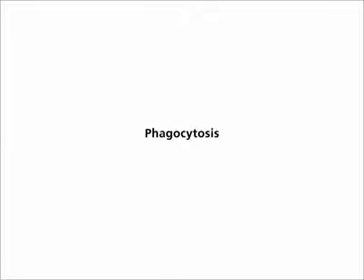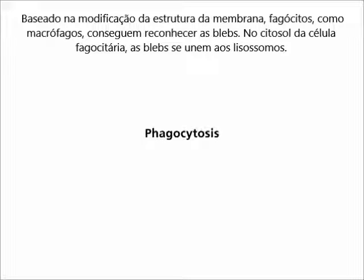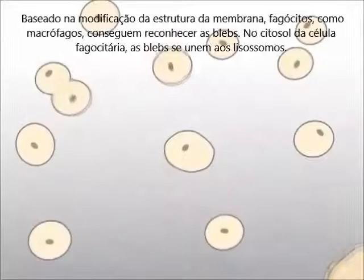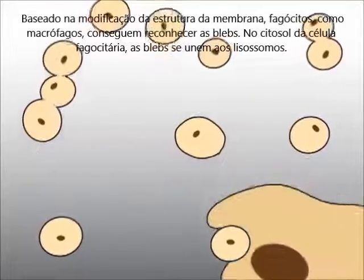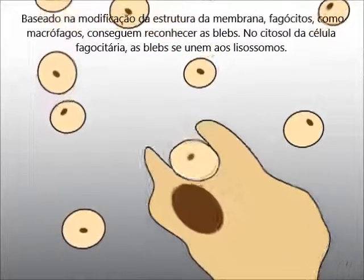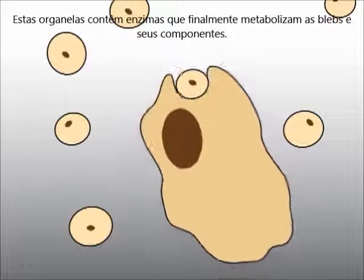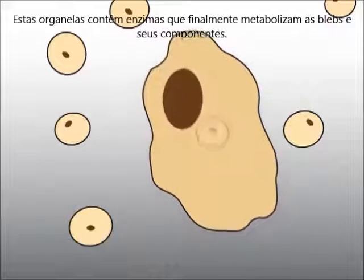Phagocytosis. The various processes of the execution phase lead to significant modifications of the structure and composition of the outer membranes of cells and apoptotic blebs. Based on the modified membrane structure, phagocytes, like macrophages, can recognize the blebs. In the cytosol of the phagocytosing cell, the blebs fuse with lysosomes. These organelles contain enzymes that finely metabolize the blebs and their components.